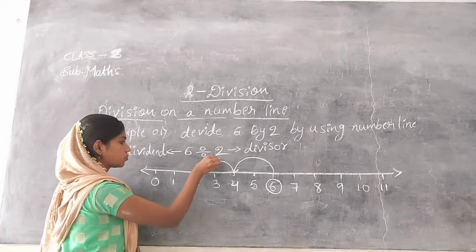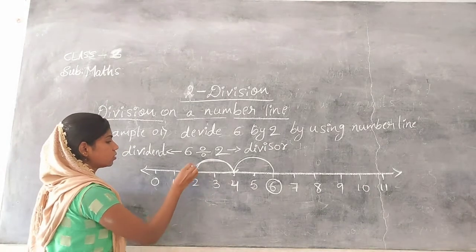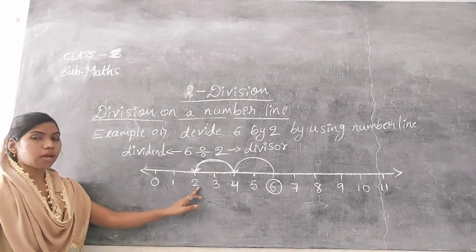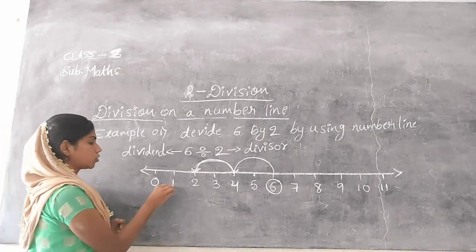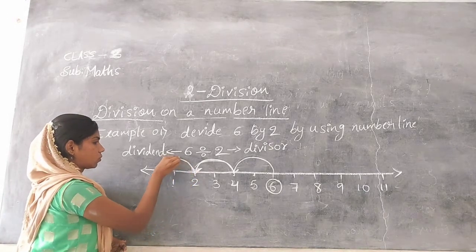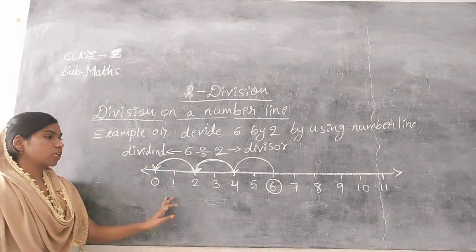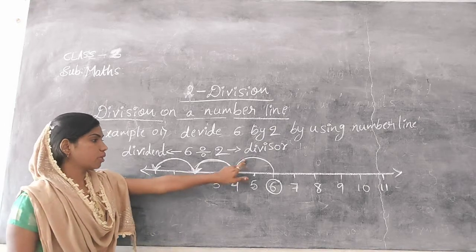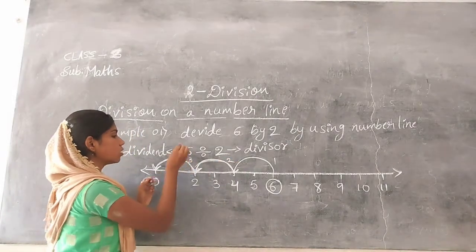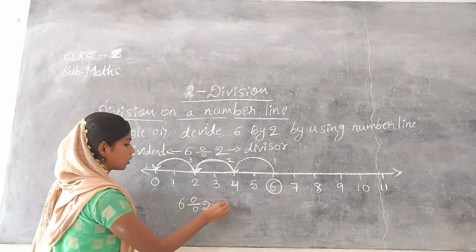Jump again from 4 — I reach number 2. And from 2, jump again by taking 2 steps: step 1, step 2. So here I jumped 1 time, 2 times, 3 times. Therefore, 6 divided by 2 is equal to 3.